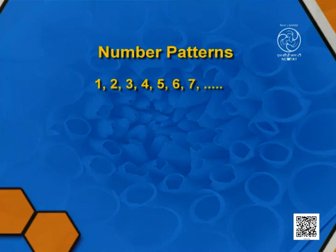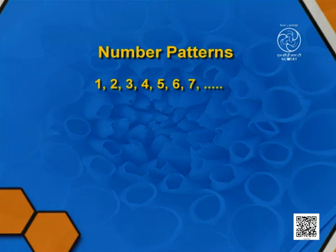Now we will see some number patterns. Here we have 1, 2, 3, 4, 5, 6, 7 and so on. It starts from 1 and increases by 1 each time — the difference between each term is 1. So we know that this is the pattern of natural numbers.